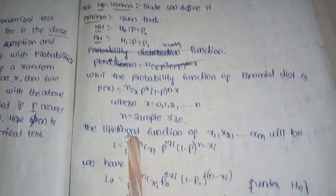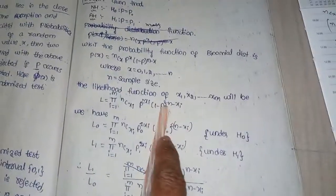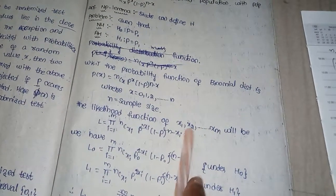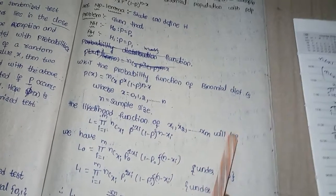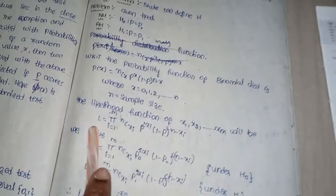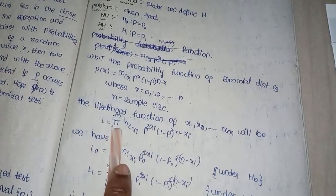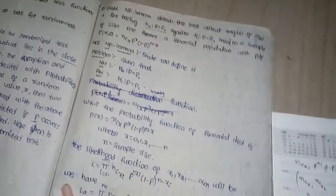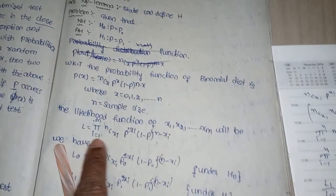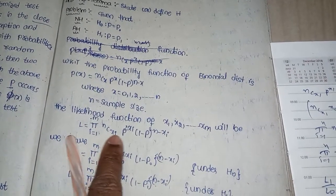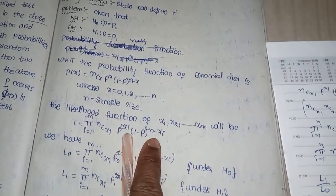We already discussed the likelihood function in Semester 3. The likelihood function L(x1, x2, ..., xM) is obtained by taking the product of individual PMFs, with i running from 1 to M: NCX_i * P^(X_i) * (1-P)^(N-X_i).